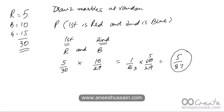Since there was only one way to make this happen — the first one has to be red and the second has to be blue — we figure out the probability of each individual case, multiply them, and get our answer of 5 out of 87.